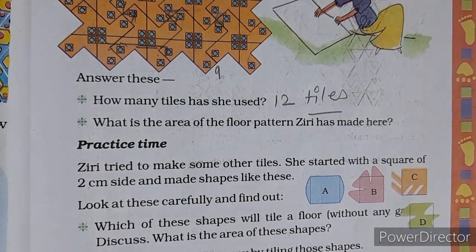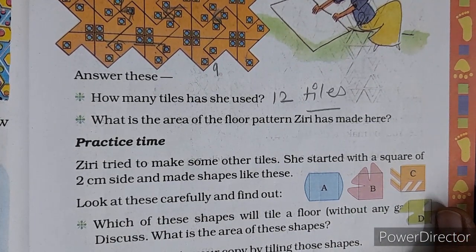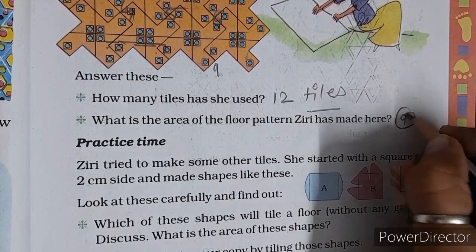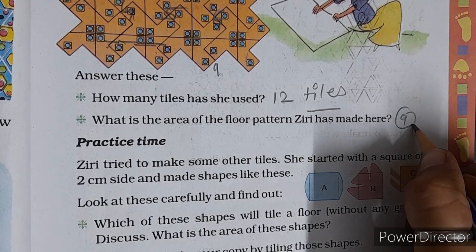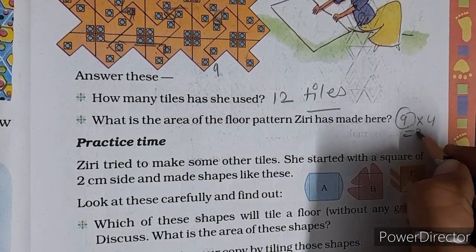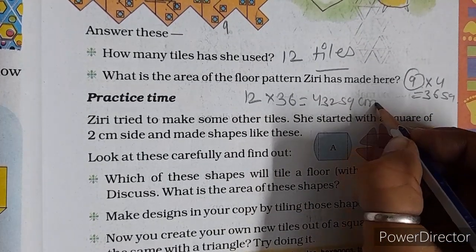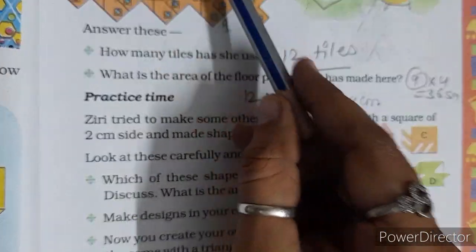12 times she has used. What is the area of the floor pattern? This pattern area, we saw earlier on page number 48. One shape area is 9. So 4 tiles will be how much? 4 are complete, so 9 into 4 is 36. So 36 is the area. 12 tiles will be how much? 12 into 36. 432 square centimeter.